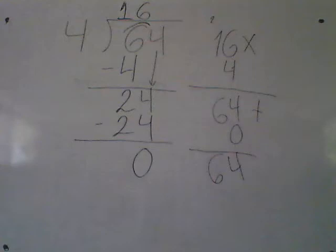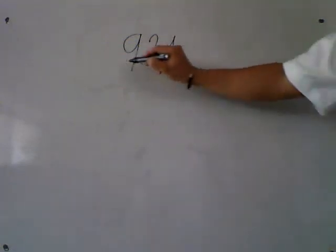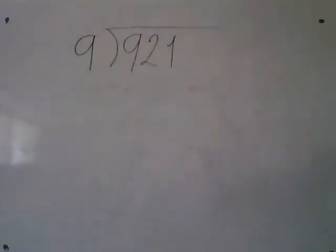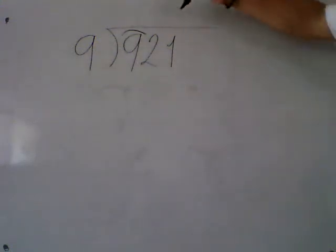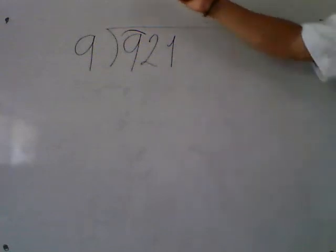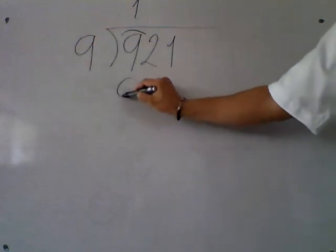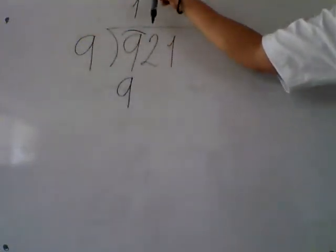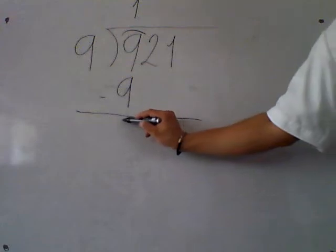Now let's go with example number 2: 991,921 divided by 9. You always start with the first number. 9 fits in 9? Yes — how many times? 1. Now, multiplication: 1 times 9 is 9. Write the answer. Next, subtraction: 9 minus 9 is 0.